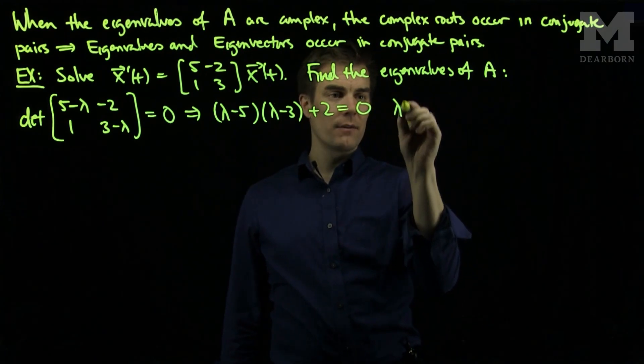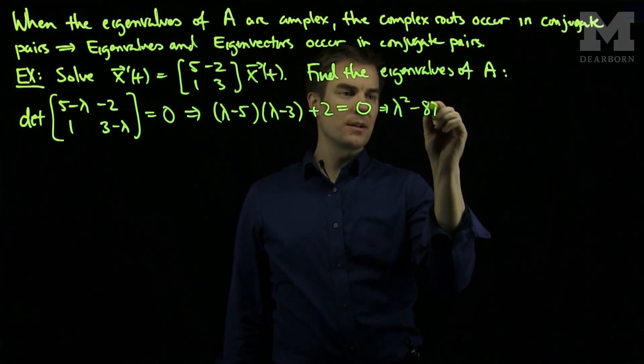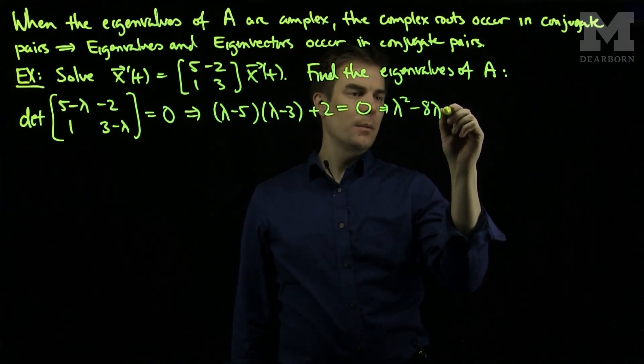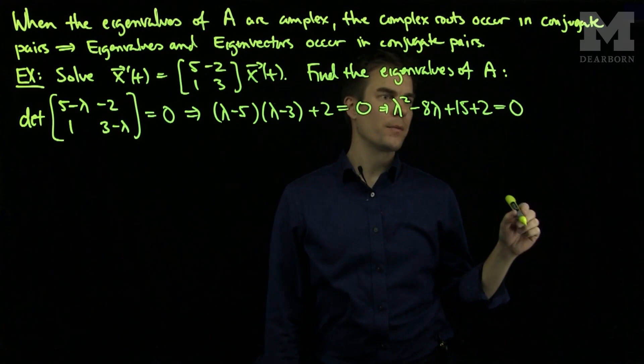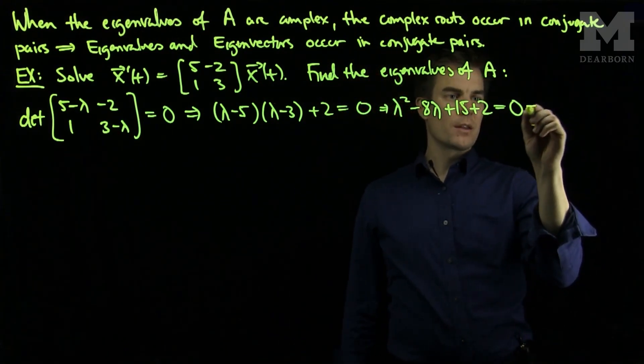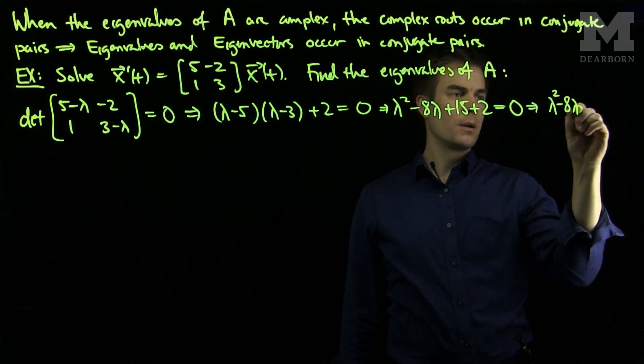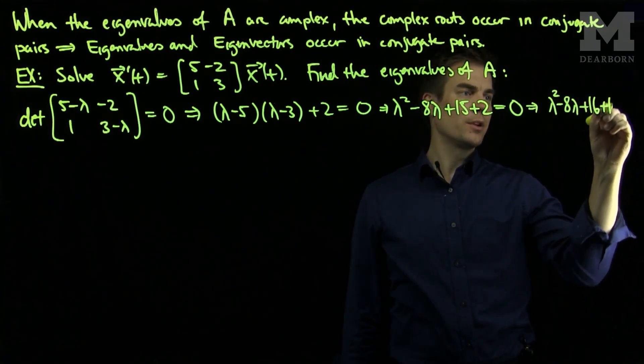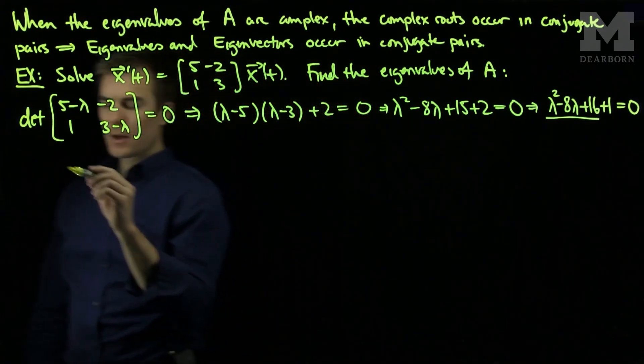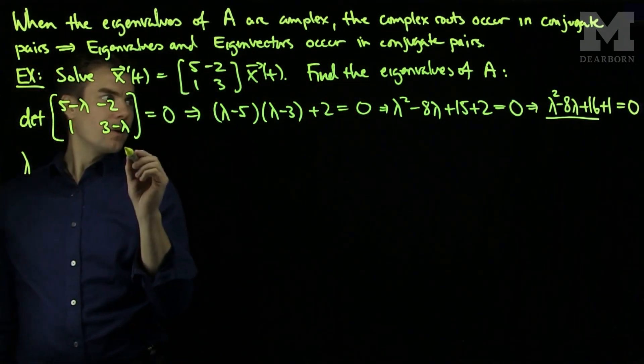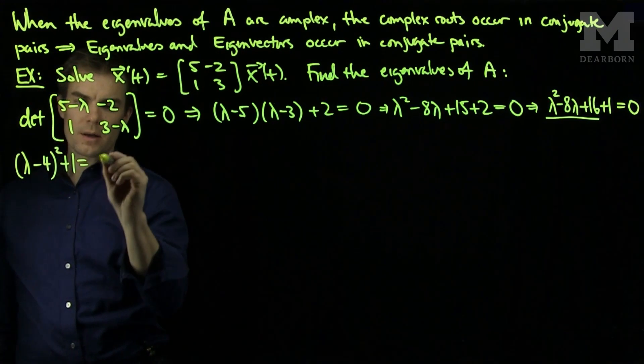When I FOIL this out, I'll have λ² - 8λ + 15 + 2 = 0. We can write this as λ² - 8λ + 16 + 1 = 0, where this is now a perfect square.